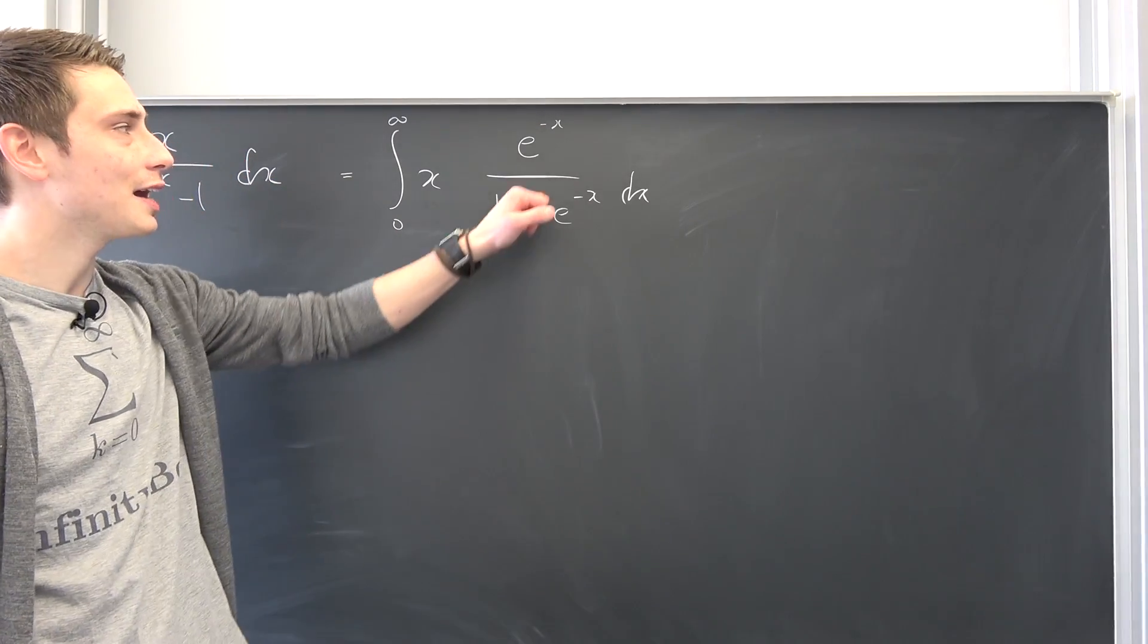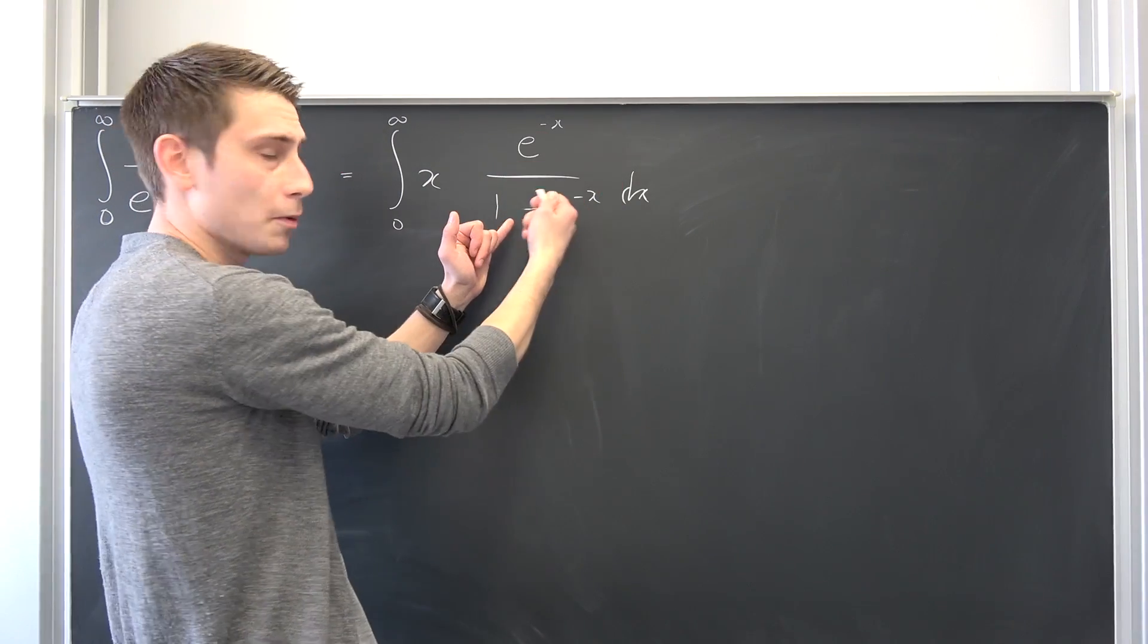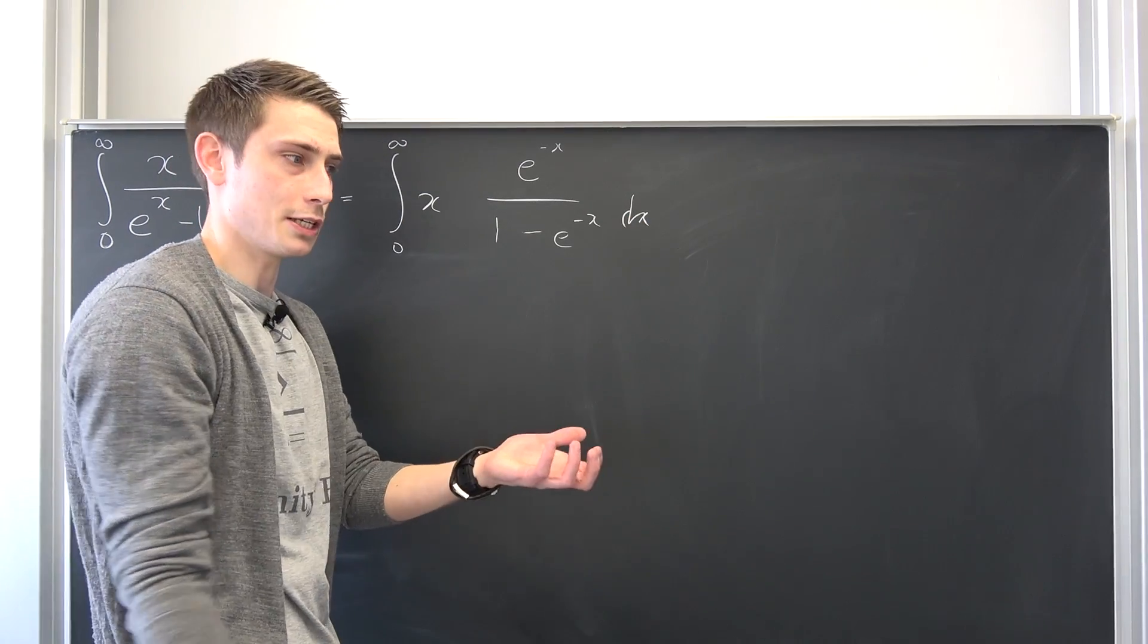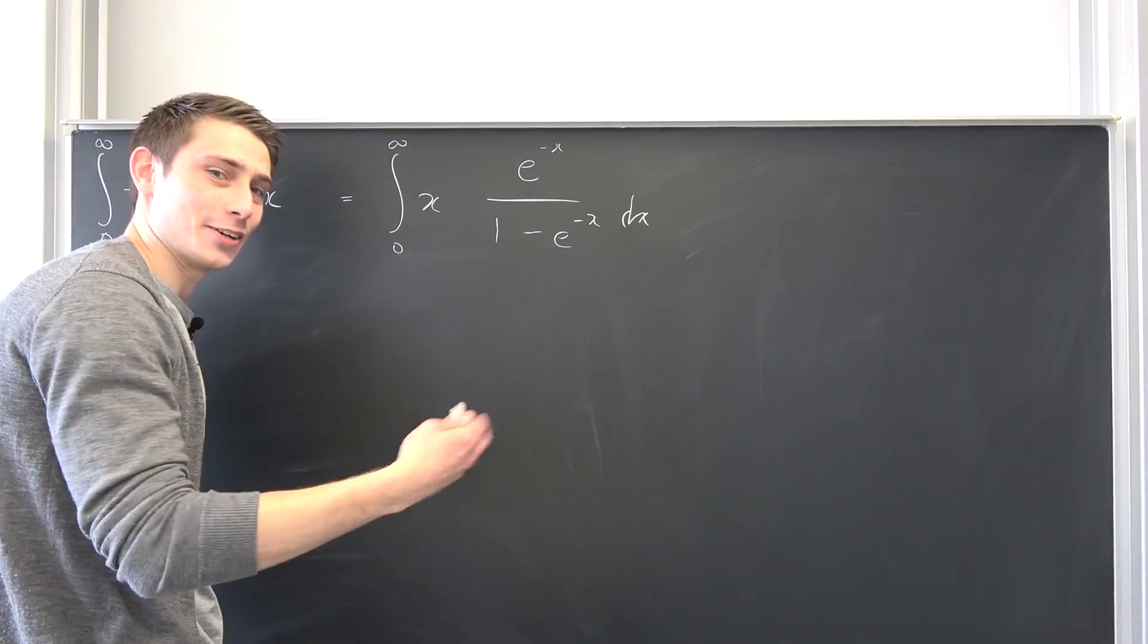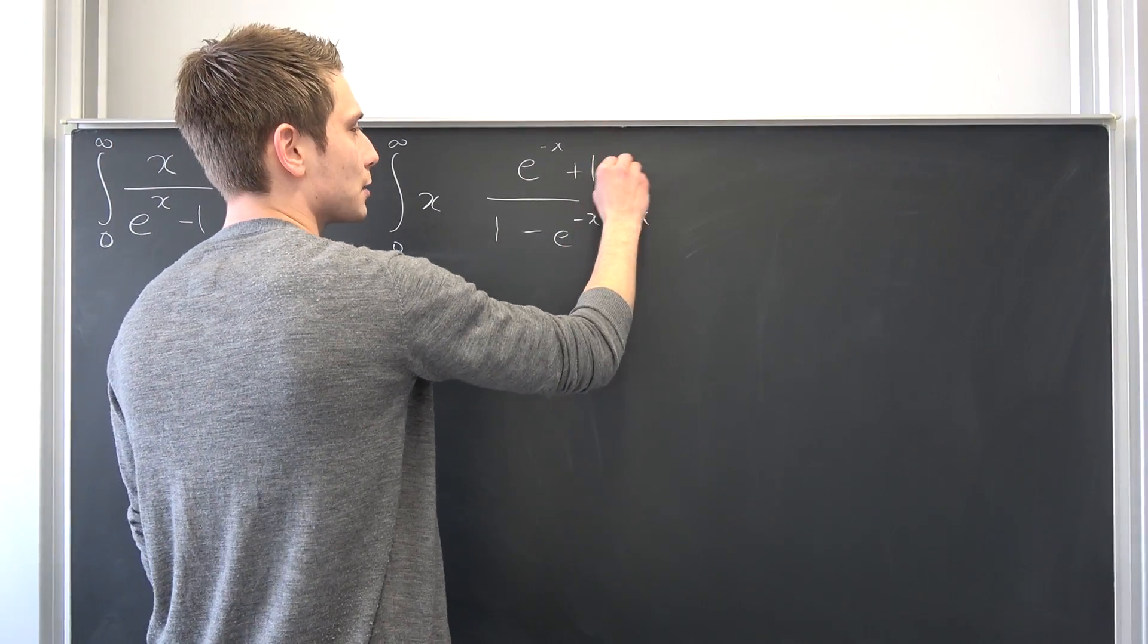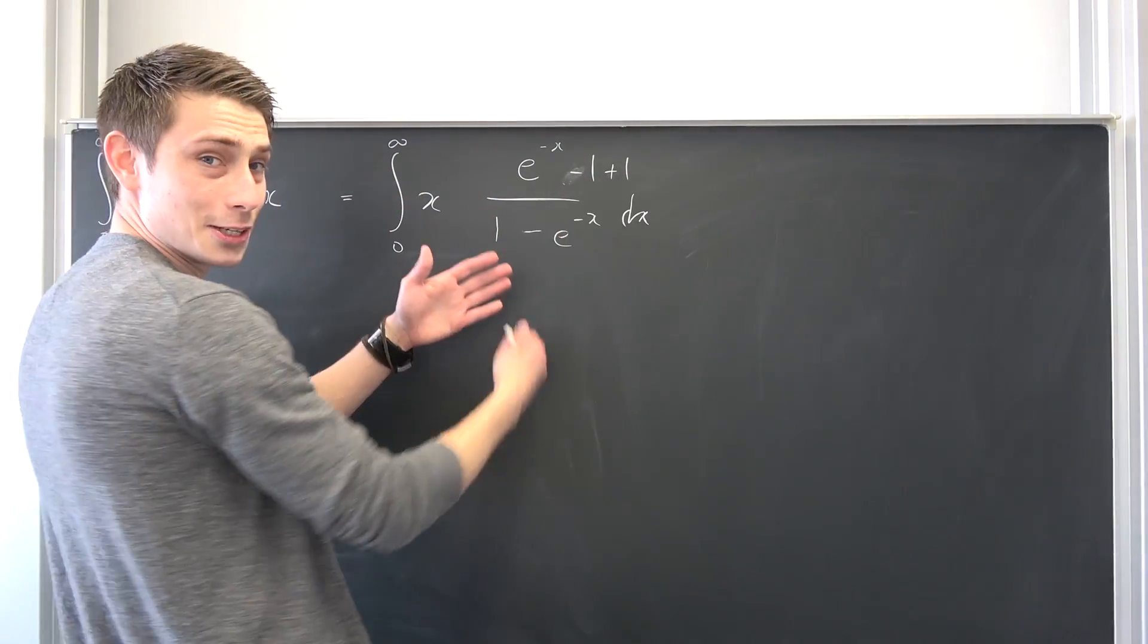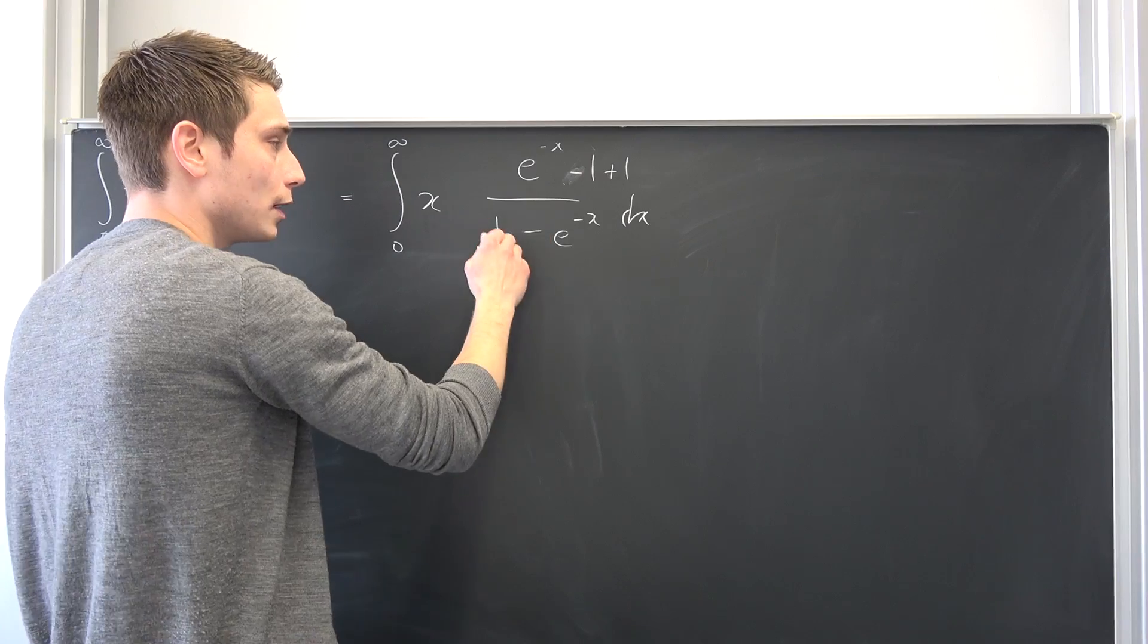We are kind of at the geometric series. The cool thing is we actually brought this right here in the form of a geometric series, but we still have this term up here. What I would like to do is to add a zero up here in the numerator. We can do this. So why not add a 1 and subtract it once again? Or why not subtract the 1 and add it once again?